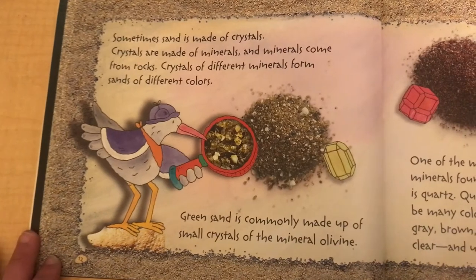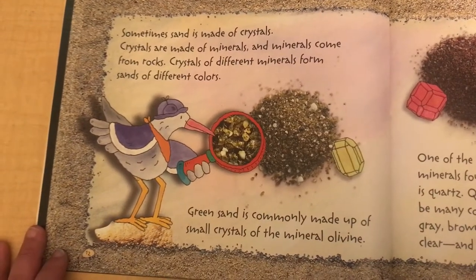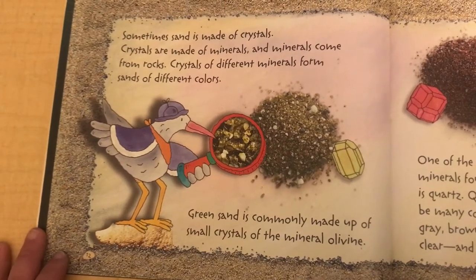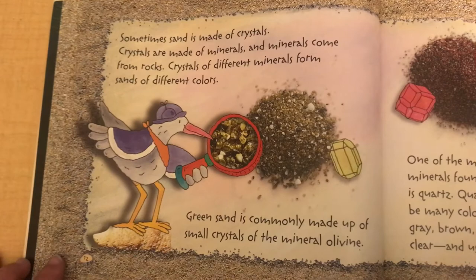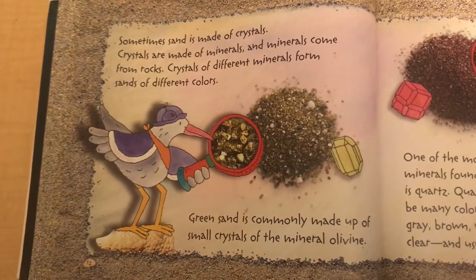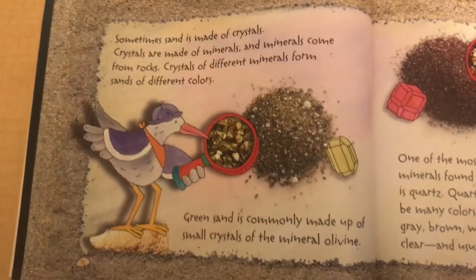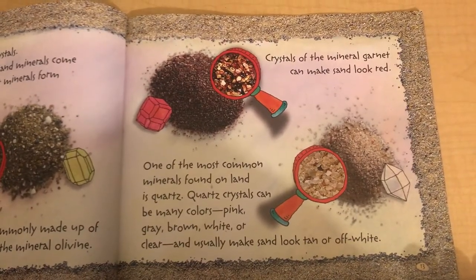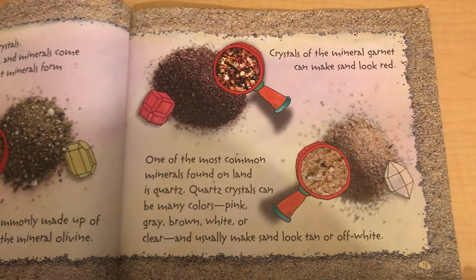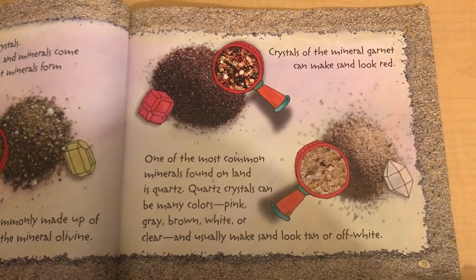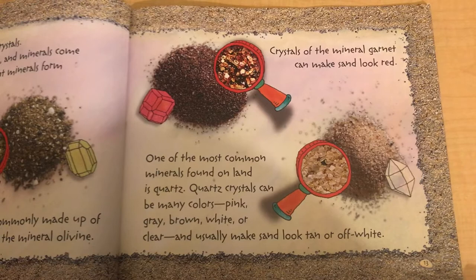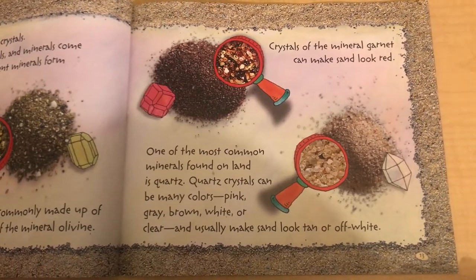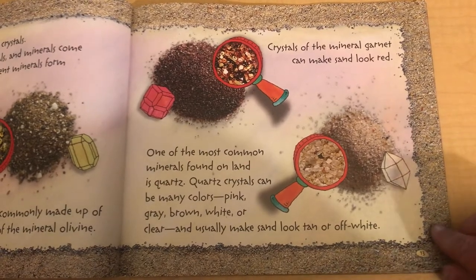Sometimes sand is made of crystals. Crystals are made of minerals and minerals come from rocks. Crystals of different minerals form sand of different colors. Green sand is commonly made up of small crystals of the mineral olivine. Crystals of the mineral garnet can make sand look red. One of the most common minerals found on land is quartz. Quartz crystals can be many colors — pink, gray, brown, white, or clear — and usually make sand look tan or off-white.